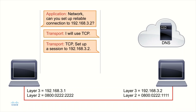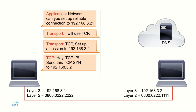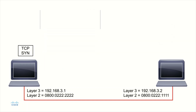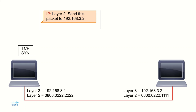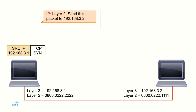So the transport layer is now going to set up a TCP session. TCP, if it were a person, would say, hey IP, let's send this TCP SYN to 192.168.3.2. The IP layer — the network layer — says, no problem, I'll send that SYN segment to 192.168.3.2. IP needs to pass this down to layer two, and as it does, it adds header information: the source IP address, the destination IP address, and the TCP header passed down from the layer above, which has the SYN flag toggled.